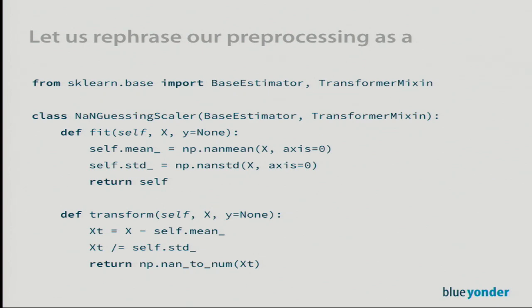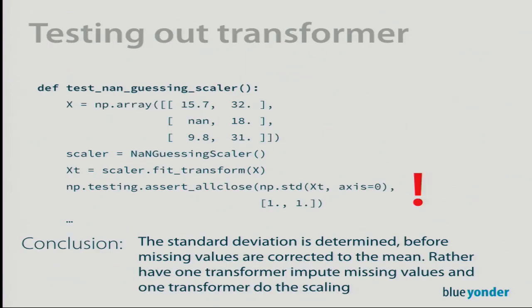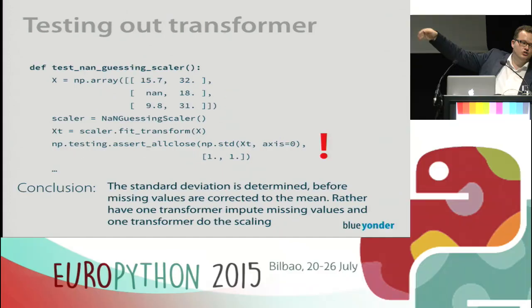Since we now have a nicely defined interface, we can start testing it. I wrote a test for our class using our example array. I create a NaNGuessingScaler, invoke `fit_transform` to obtain a transformed matrix, and then test assumptions about the outcome of the transformation. And the test actually finds an issue — our implementation was wrong!